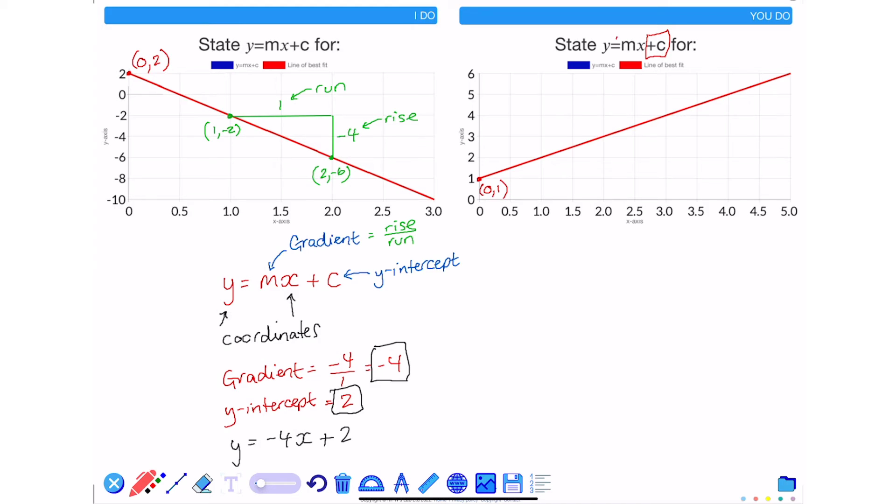To calculate the gradient, the value of m in the equation, find two coordinates and it can be any two coordinates on the line. So I've identified these two points. The first one is 1, 2. The second is 3, 4.